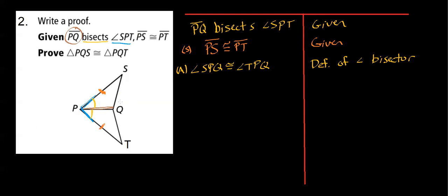And in this case, we have this segment PQ. That is a segment of triangle PQS and of triangle PQT. So we're basically using our reflexive property of segment congruence here.